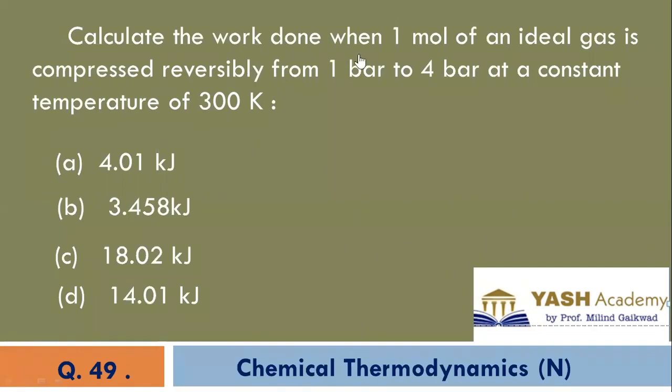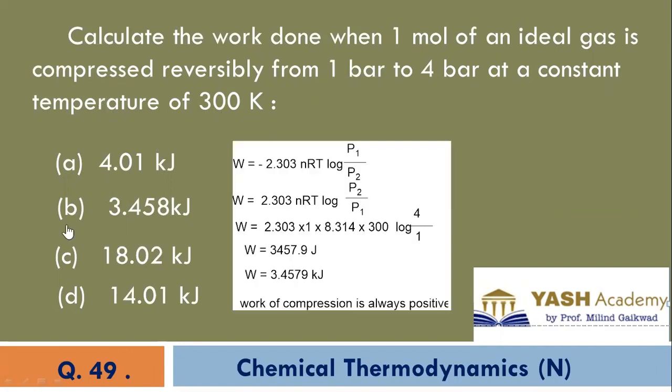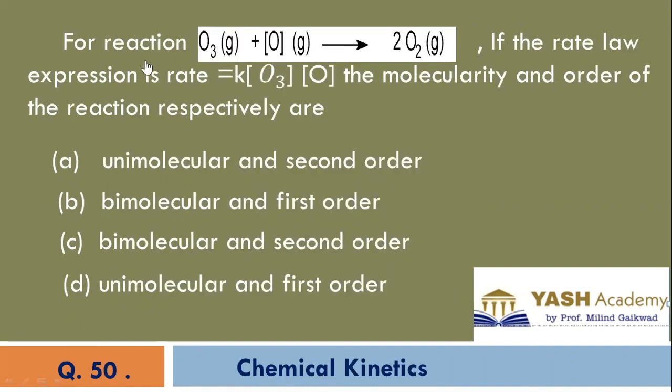Calculate the work done when one mole of an ideal gas is compressed reversibly from one bar to four bar pressure at a constant temperature of 300 kelvin. The correct answer is 3.458.